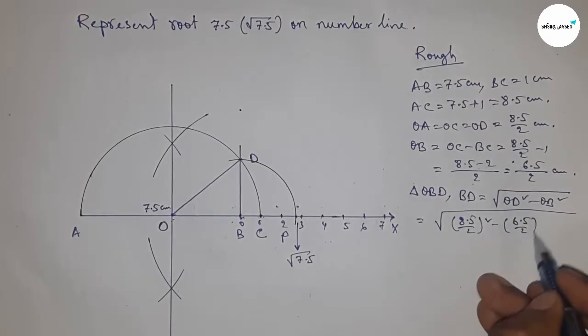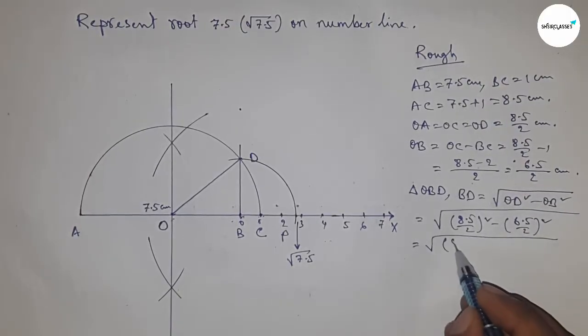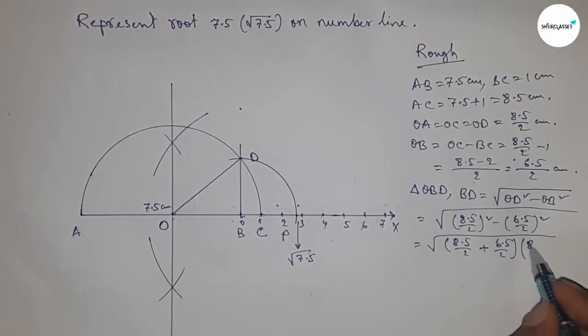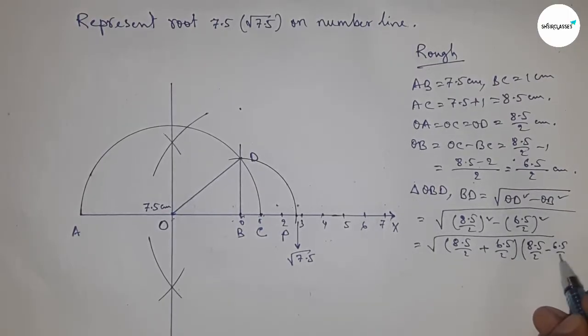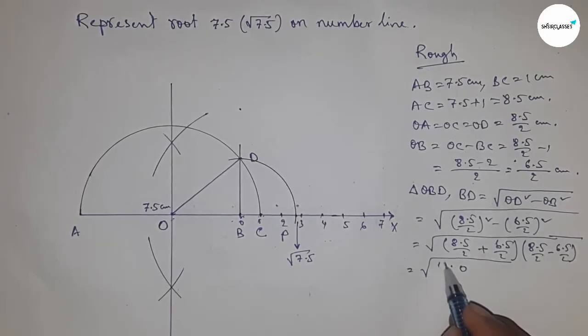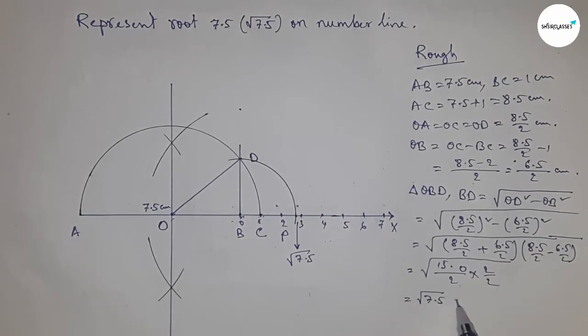Next, I'm going to use the formula A squared minus B squared equals (A plus B) times (A minus B). So here applying the formula first. So from this, this is 15.0 by 2 into 2 by 2.